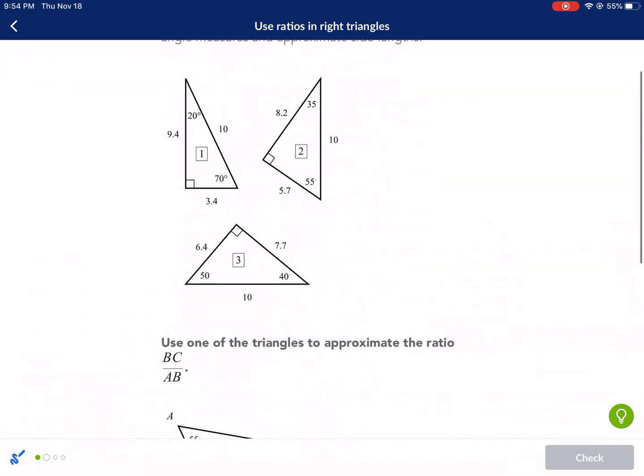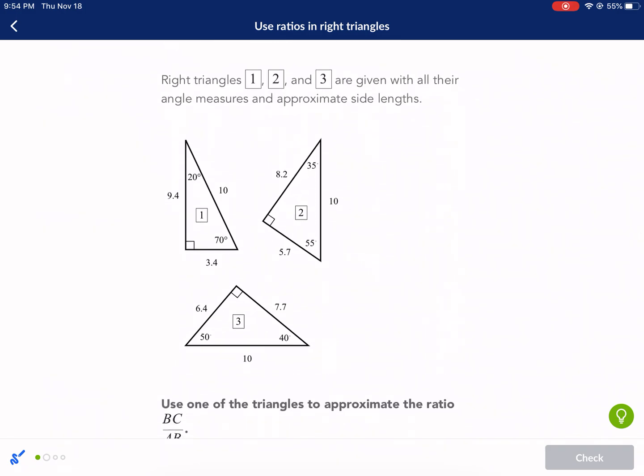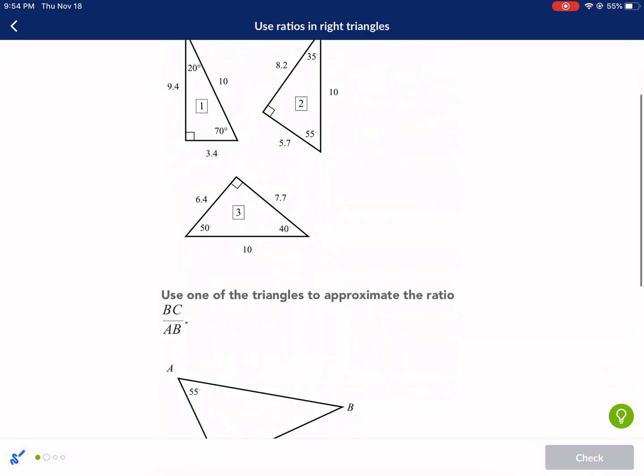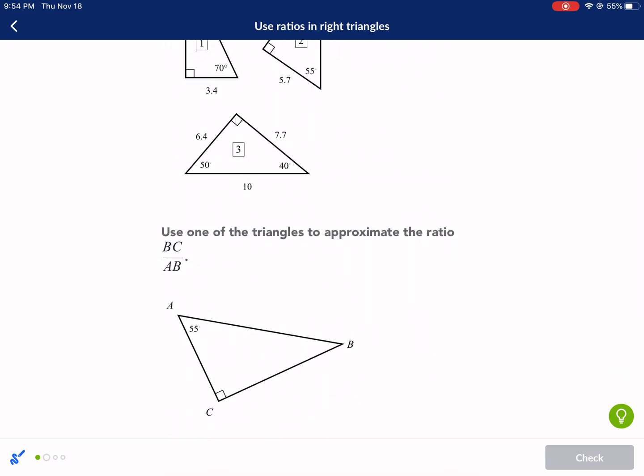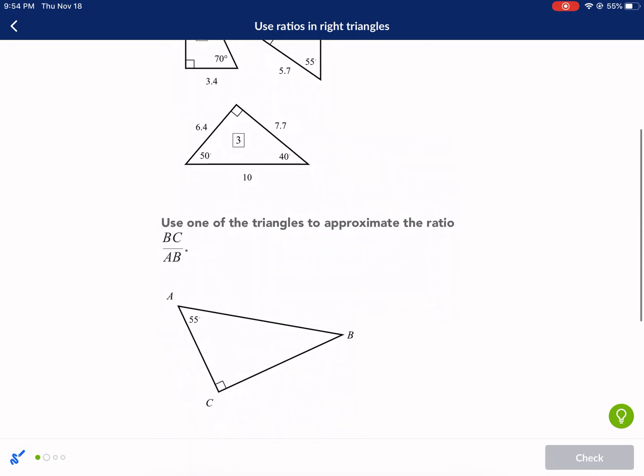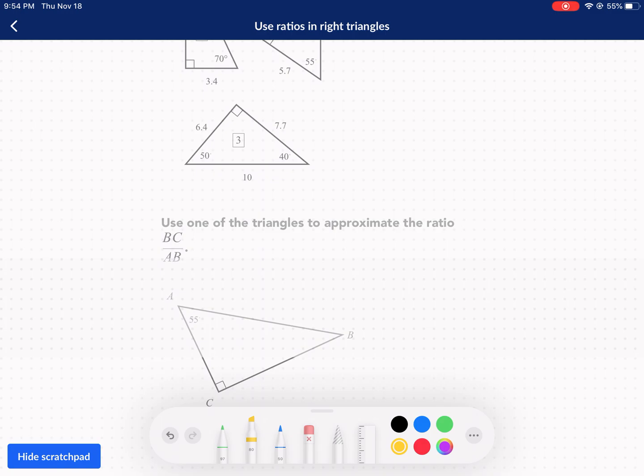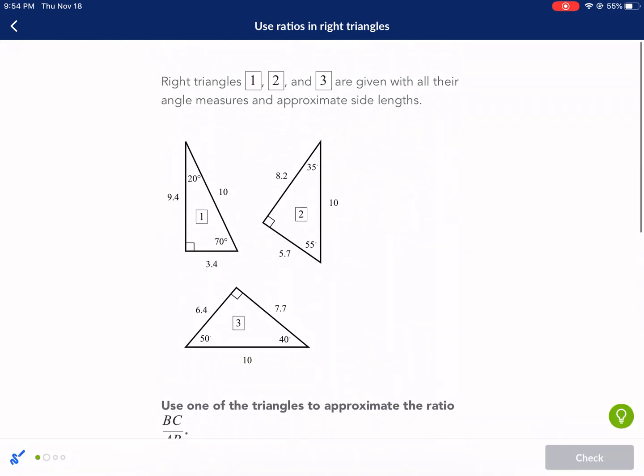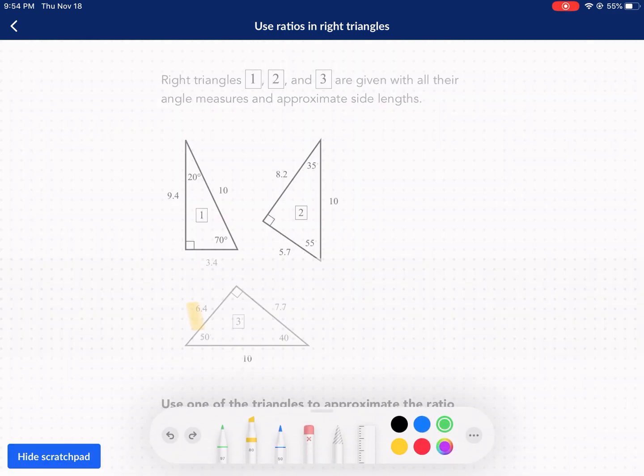Now we got the basics of it, let's go on to this next one. This one is different. Right triangles 1, 2, 3 are given with all their angle measurements and approximate side lengths. Use one of the triangles to approximate the ratio AC over AB. Clearly I'm just trying to match this up with different triangles. The big hint there is the 55, and there's only one 55.